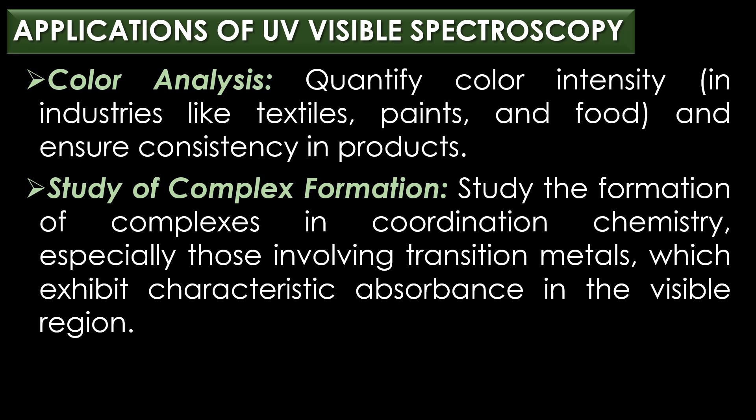In industries like textiles, paints, and food, UV-visible spectroscopy is used to quantify color intensity and ensure consistency in products. The eighth application is study of complex formation: UV-visible spectroscopy is used to study the formation of complexes in coordination chemistry, especially those involving transition metals, which exhibit characteristic absorbance in the visible region.